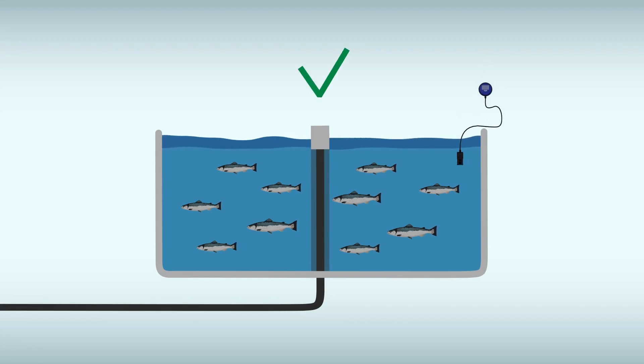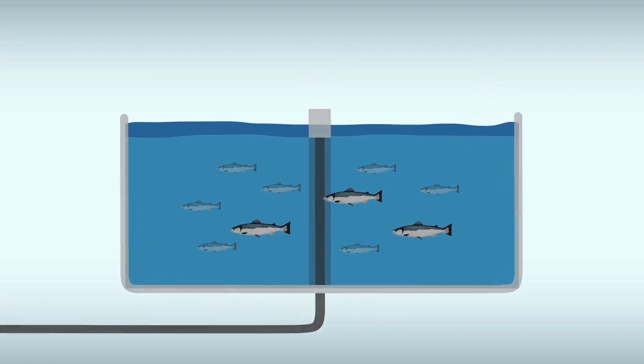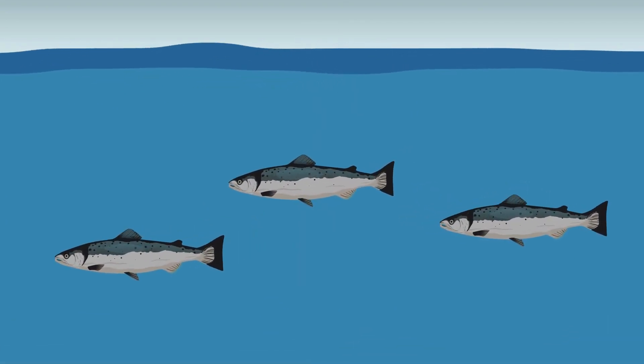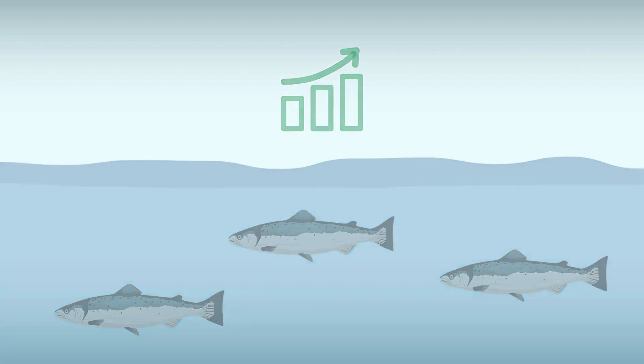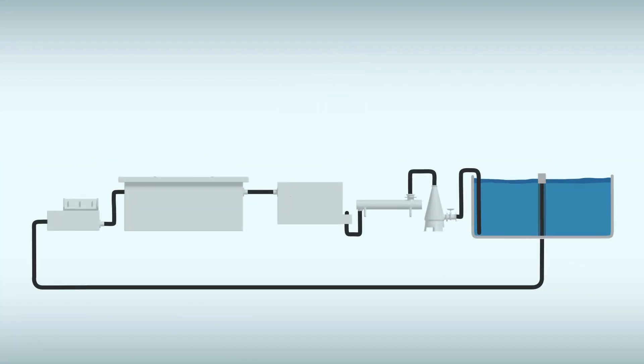Maintaining good water quality in a RAS facility is crucial for safeguarding fish welfare and ensuring financially sound production. To achieve this, you are dependent on all parts of the facility functioning properly so that you have control over water quality parameters.